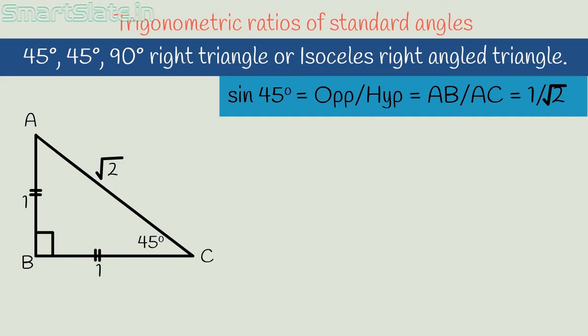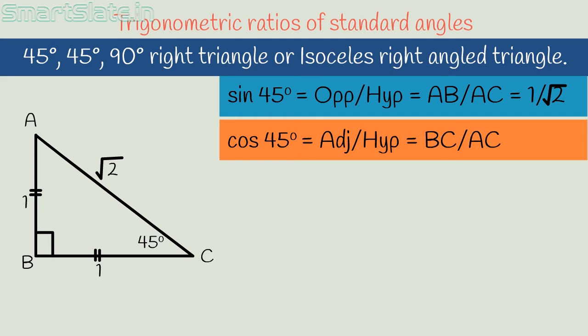In similar way, let's find cos 45 degrees. It is adjacent side by hypotenuse. Adjacent side with respect to angle 45 degrees is BC by AC. It is 1 by square root of 2.